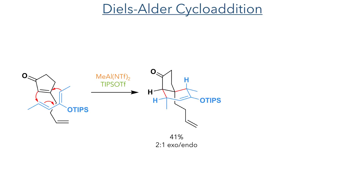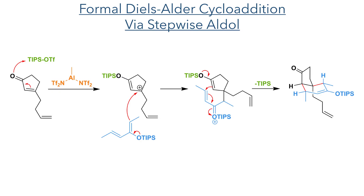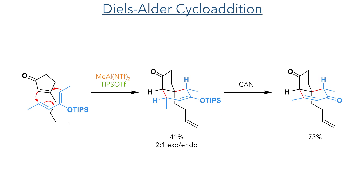The synthesis begins with the Diels-Alder reaction. This reaction was conducted with methyl aluminium bis-triflimide and TIPS-triflate, forming the product in a 41% yield with a 2-to-1 exo-to-endo ratio. This exoselectivity is uncommon, and it has been proposed in other systems that the mechanism isn't a typical concerted Diels-Alder addition, but instead a stepwise Mukaiyama-Alder addition followed by an intermolecular Michael addition. Regardless of the precise mechanism, the desired product was formed and the silyl enol group was oxidised to an enone using cerium ammonium nitrate.